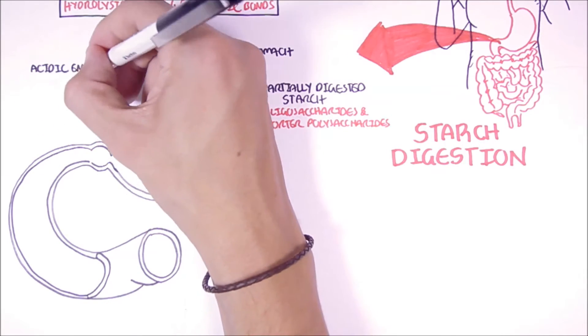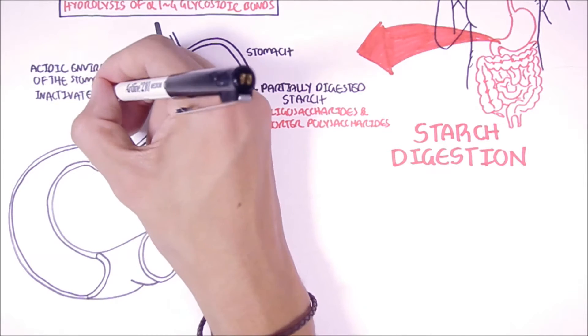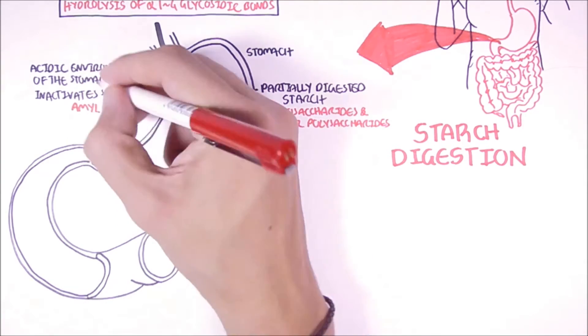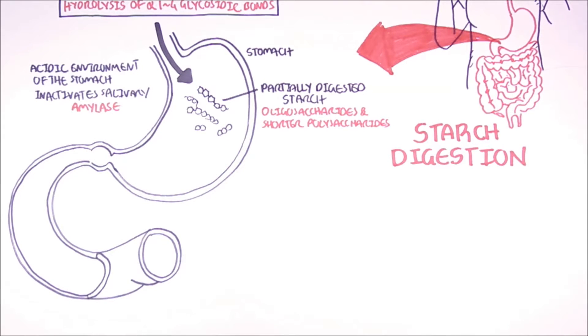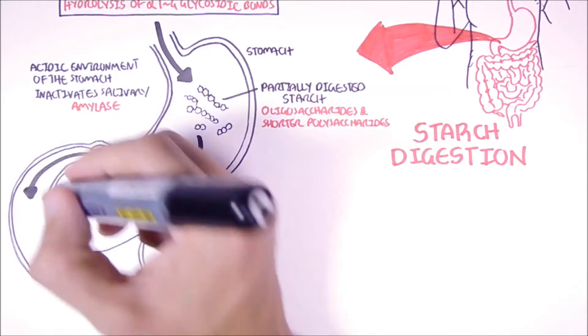This is because the acidic environment of the stomach actually inactivates the salivary amylase. And so starch digestion does not occur within the stomach. The stomach will only mix the content around and then allow the starch to reach the small intestine.